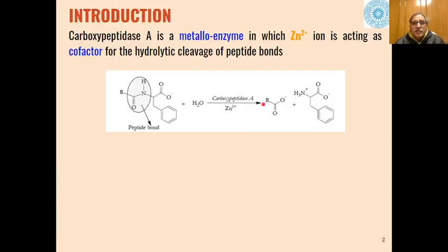Carboxypeptidase A is a metalloenzyme which acts on the hydrolysis of various polypeptide bonds in presence of Zn2+ ions, which act as cofactor for this type of hydrolytic cleavage of peptide bonds. These types of peptide bonds are hydrolyzed to give carboxylic acids and amino acids as the product. The enzyme used is carboxypeptidase A and cofactor is Zn2+ ions.